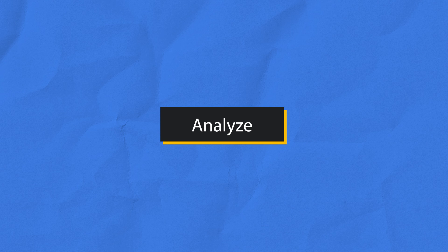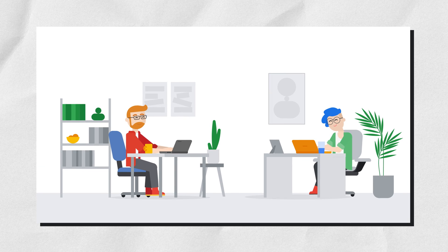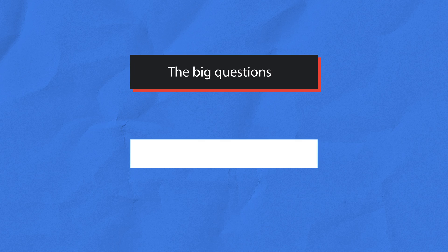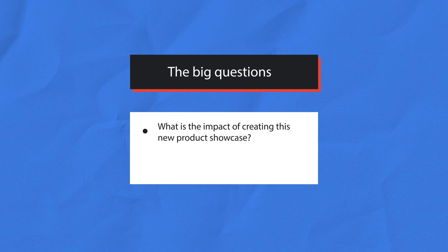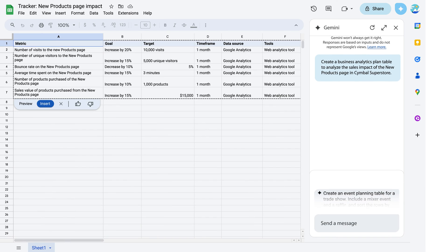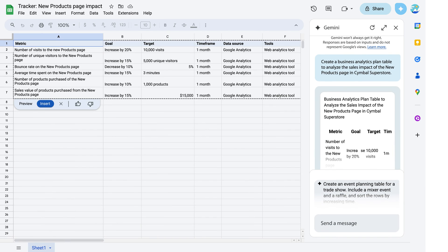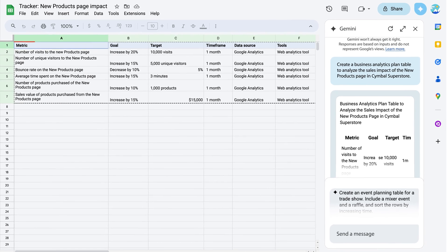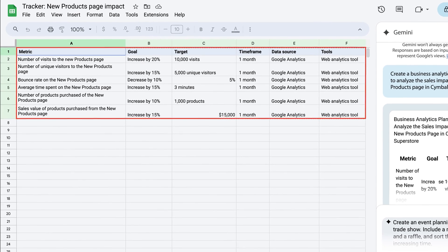After a few weeks go by, the product lead asks for a few slides to present at an upcoming executive update. I get together with an analyst on my team to prepare the information that is needed. The big question is, what is the impact of creating this new product showcase? Did it lead to improved sales or to other helpful business insights? In Google Sheets, we asked Gemini to create a plan table to help us analyze the sales impact. Here we have a table that we can fill in with our own sales targets later on.